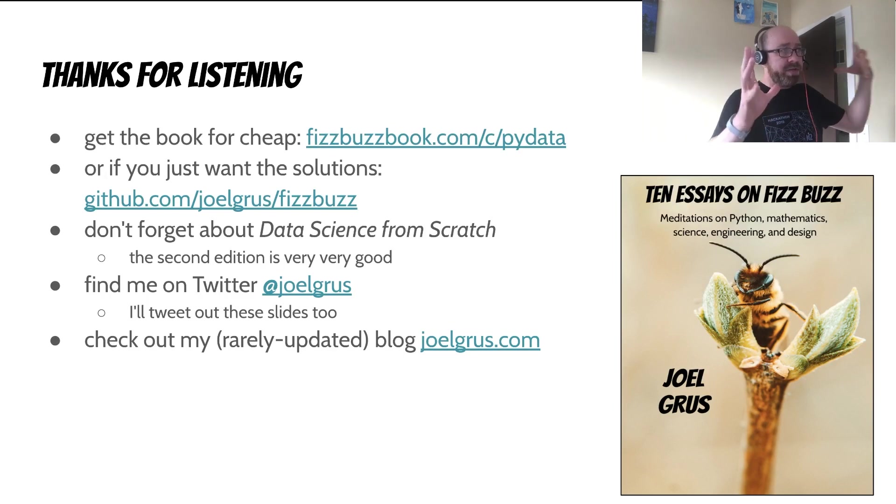Anyway, those are my 10 solutions to FizzBuzz. If I've made you curious, you can get the book for cheap at fizzbuzzbook.com. That's a coupon for this conference. Or if you don't want to buy the book or read the book or anything and you just want to see these solutions, they're all on GitHub for free. Just go to github.com/joelgrus/fizzbuzz and you can find them there and play with them yourselves.